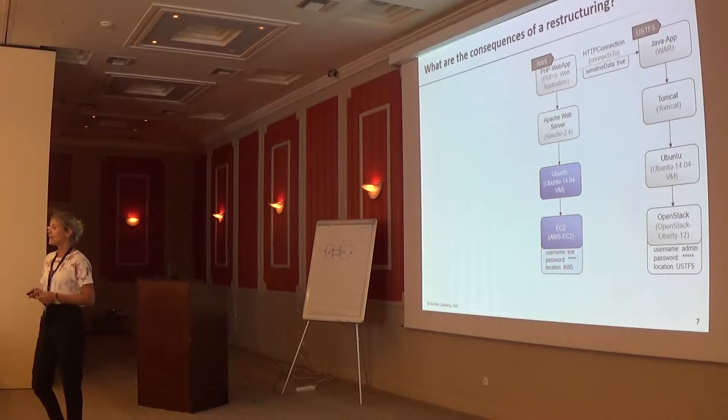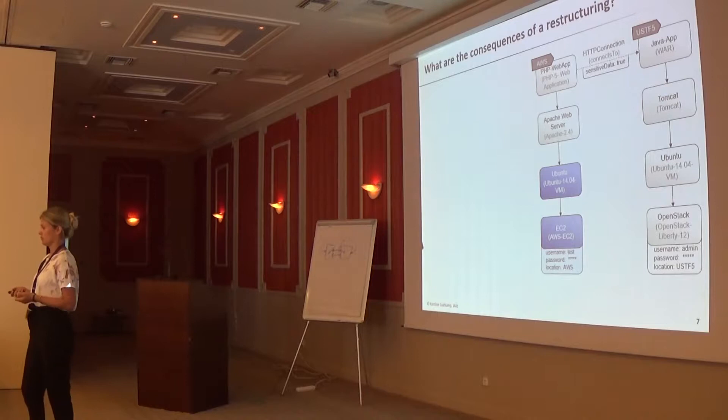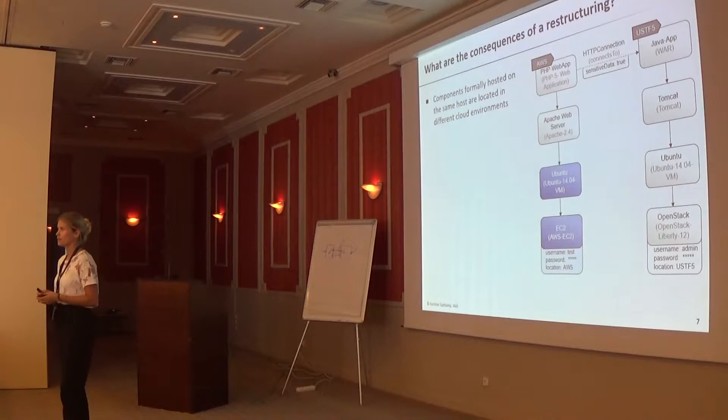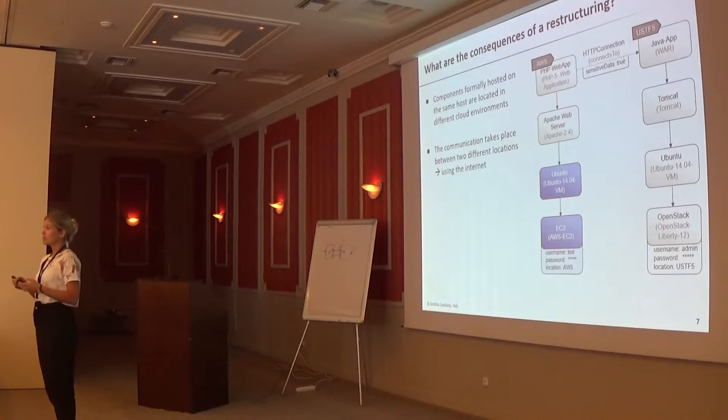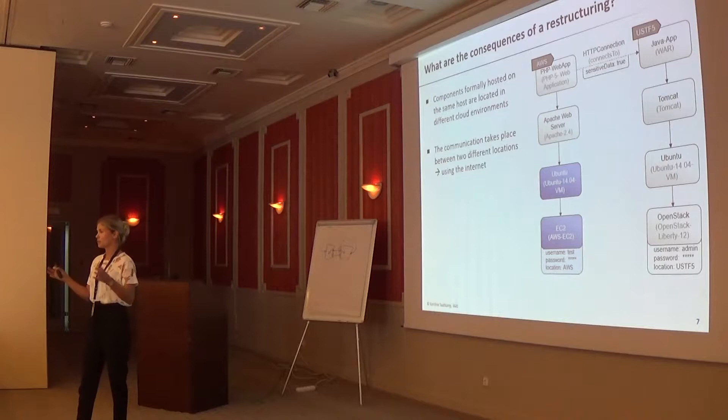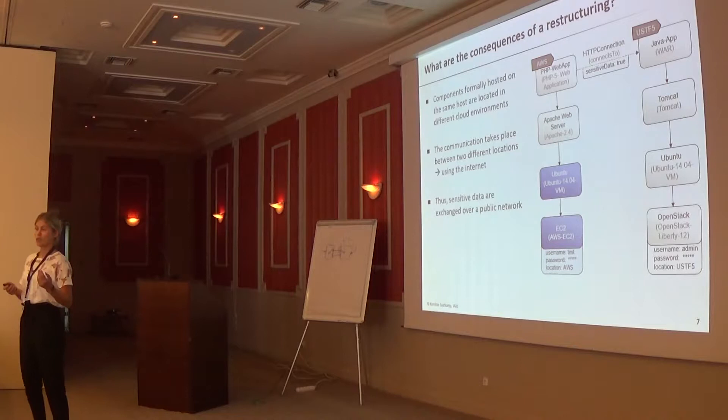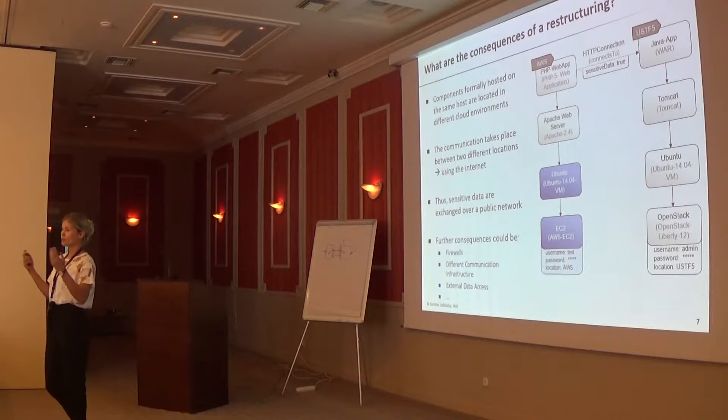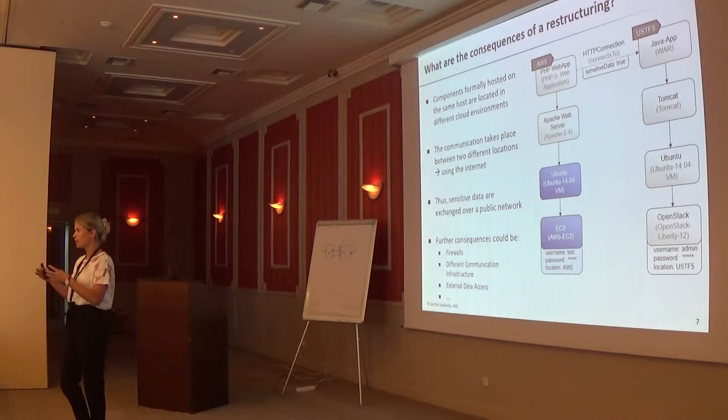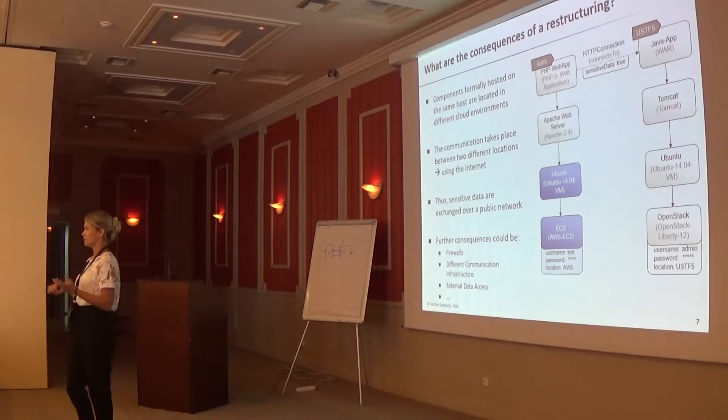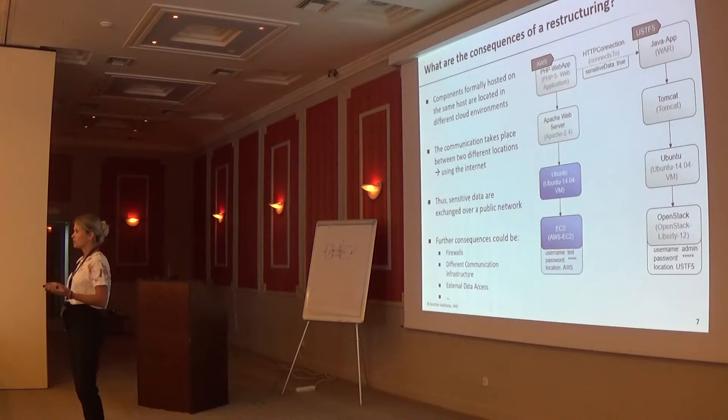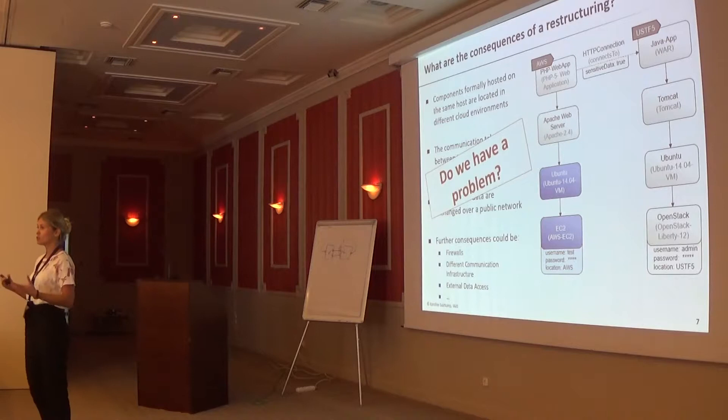So now we changed the topology - what are the consequences? The components which formerly were hosted on the same host are now distributed to different environments. This means the communication which formerly took place on the same environment is now taking place over the internet, over a public network, so sensitive data are exchanged across the public network. This is what we can see in this example, which is a small example, but several other things can happen - for example there could be a firewall restricting them by one environment, different communication infrastructures, and so on. The question is: do we have any problems now? We don't know. Is it still a valid topology which we can deploy with the behavior as we want to have it?